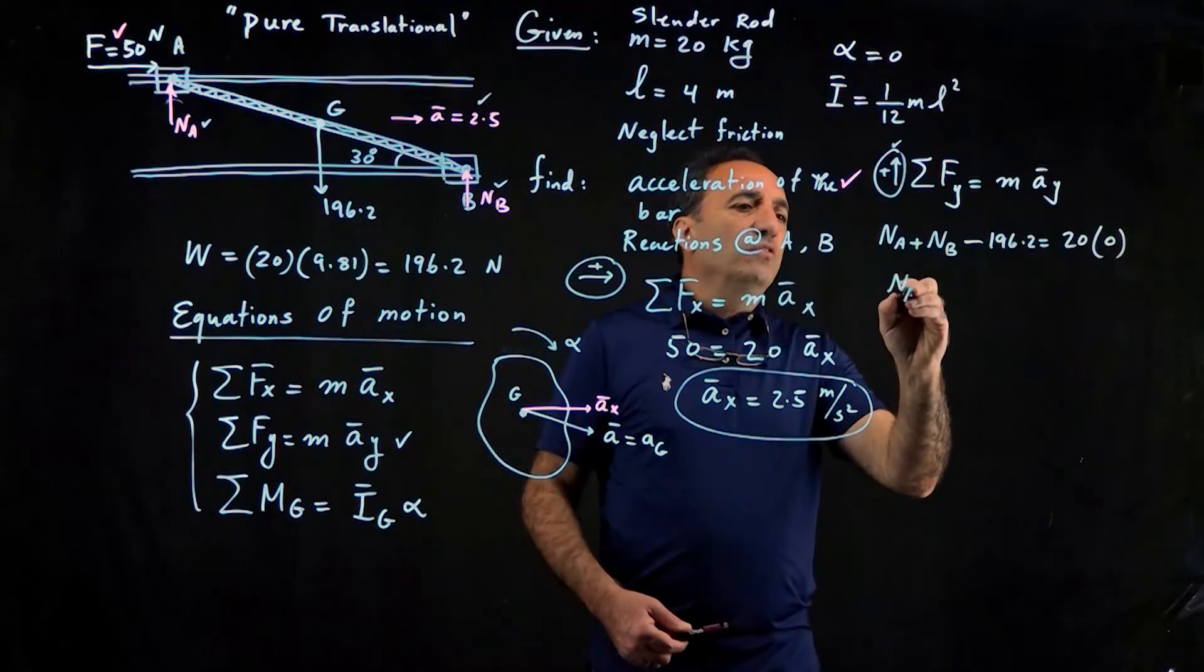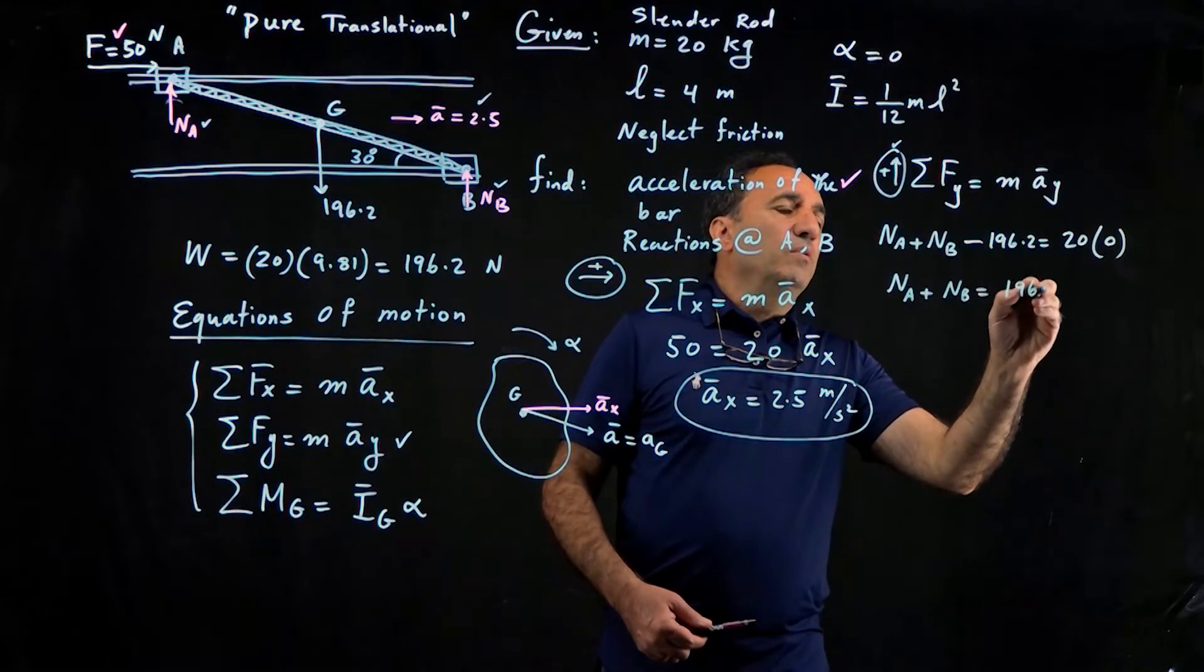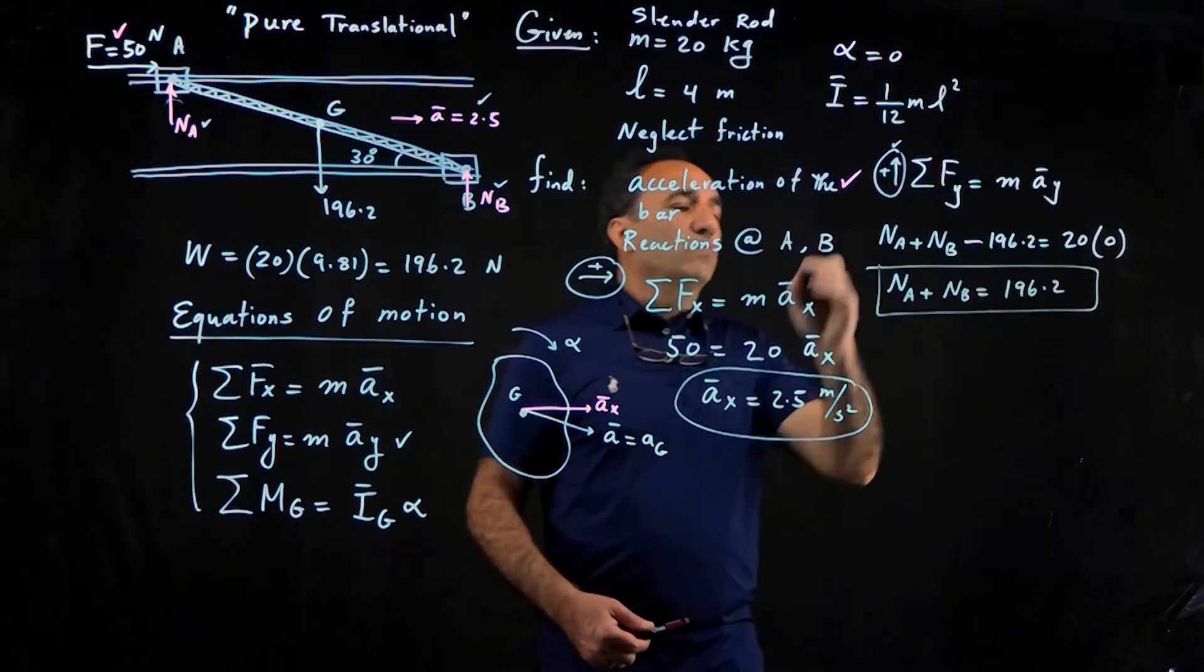Therefore, basically, you're saying that this system, this rod, is in equilibrium in the y direction. So cleaning up the equation, we get this.